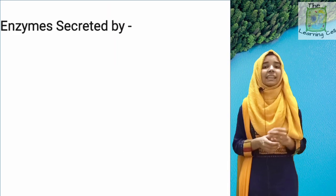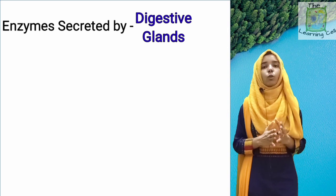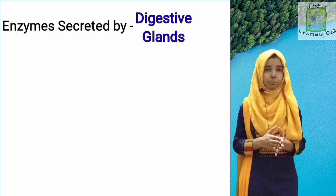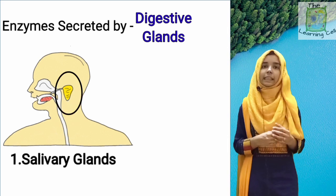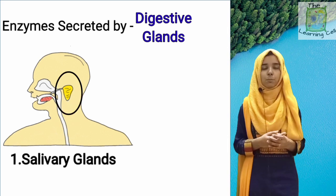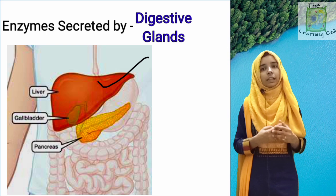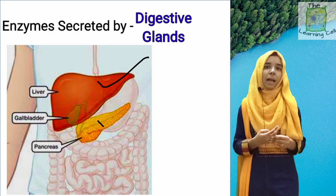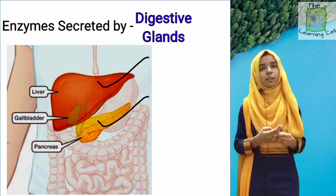These enzymes are secreted by digestive glands. In our body, the digestive glands are: first, salivary glands which secrete saliva; second, liver which forms bile; and third, pancreas which secretes pancreatic juice.